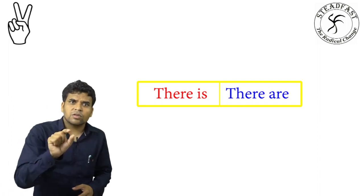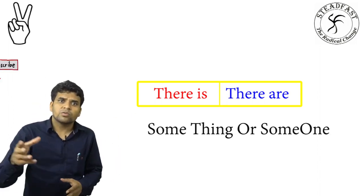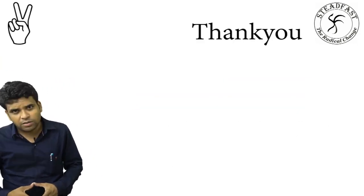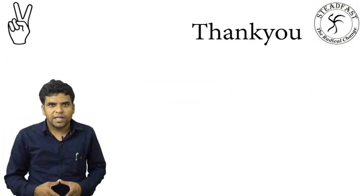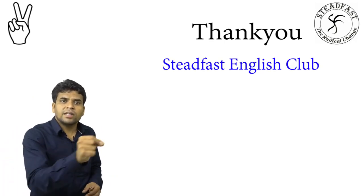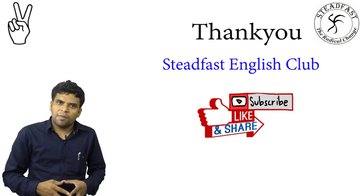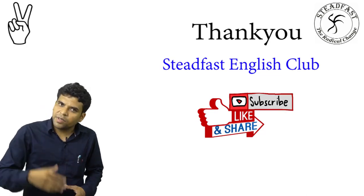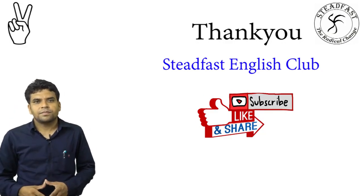There is and there are — used to describe things, someone or something. If there is one, use 'there is'. Thank you so much for listening. Please watch and subscribe to our YouTube channel, State First English Club.